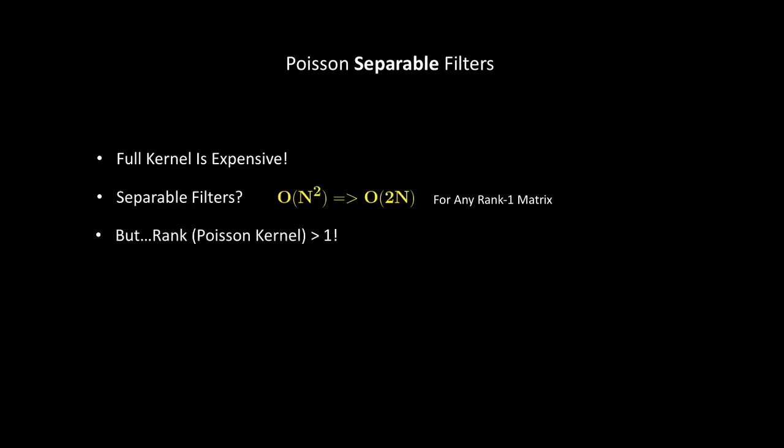There is a problem though. The full kernel is a dense matrix that is expensive especially for a high number of iterations. What we can do instead is to replace it with separable filters. This turns the O n-square complexity into a linear complexity for any rank 1 matrix, but we can easily see our Poisson kernel is not rank 1. This makes us think of a kernel reduction to reduce it to rank 1.